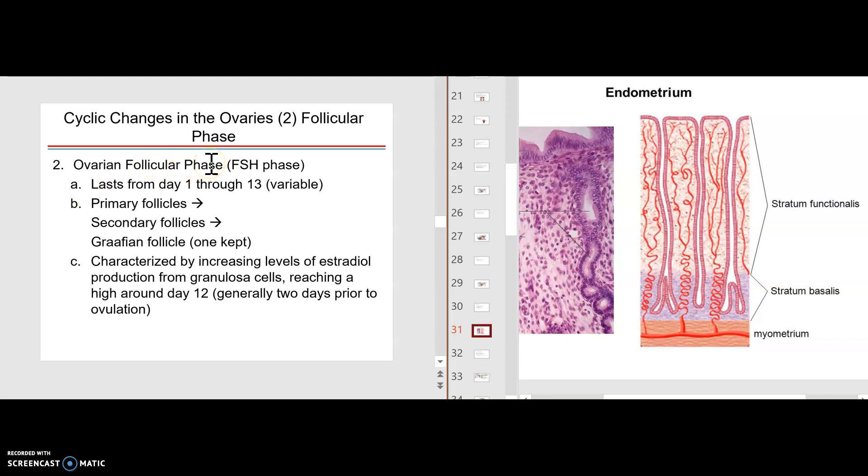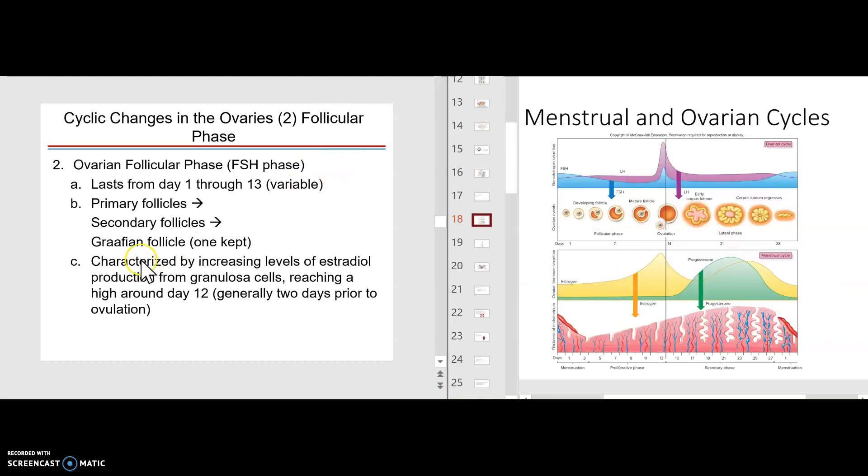So the ovarian follicular phase, the FSH phase, lasts for about 1 to 13 days. During that time, the primary follicles, secondary follicles, graafian follicle, one is kept, all the others regress. This is characterized by an increasing level of estradiol from the granulosa cells. Remember they are producing it because of the conversion of testosterone to estradiol. Now this causes the endometrium, which is thinned down, to become thicker, proliferate, to get ready.